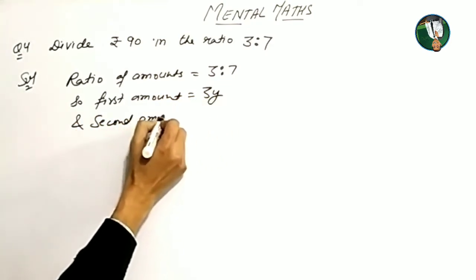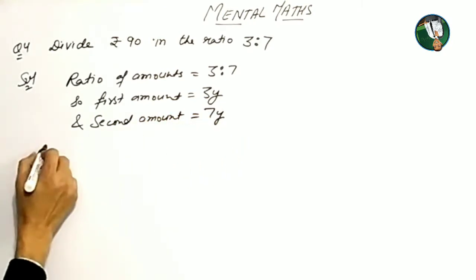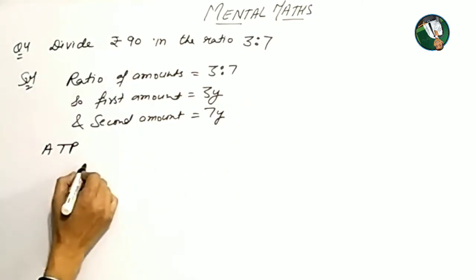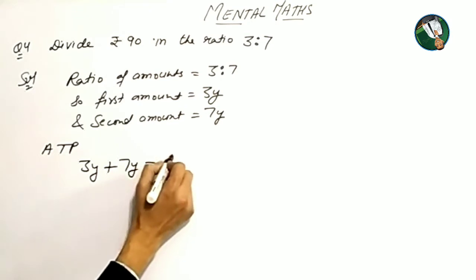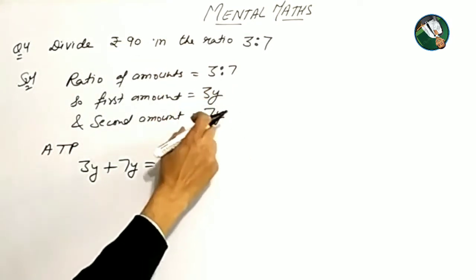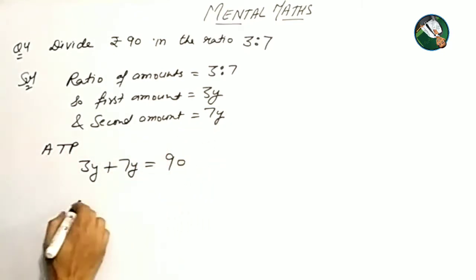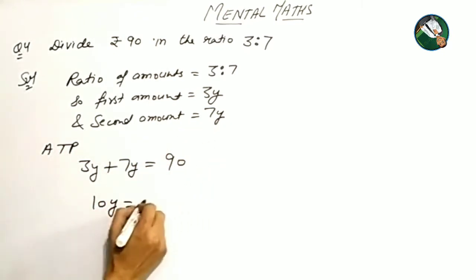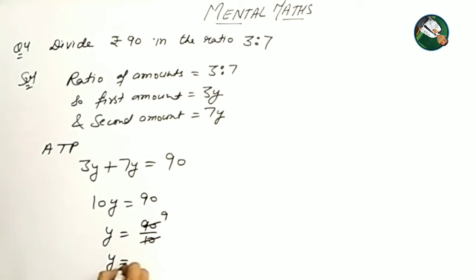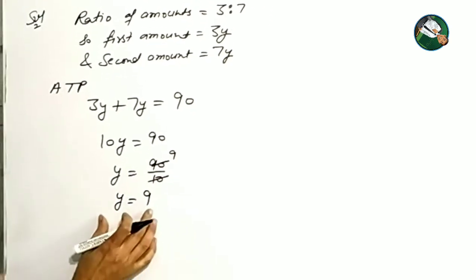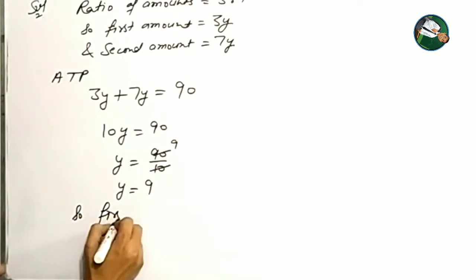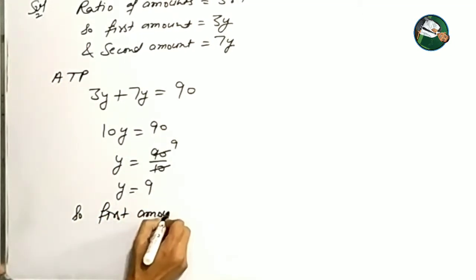The second amount is 7y. According to the problem, the two amounts together should equal Rs. 90, so 3y plus 7y is equal to 90. This gives 10y is equal to 90, then y is equal to 90 upon 10, which means y is equal to 9.